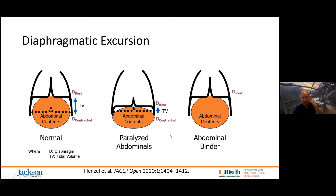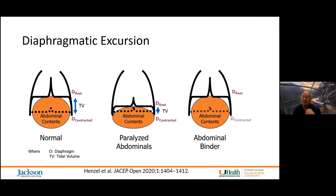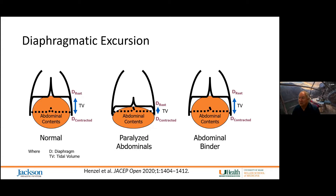We can employ a very inexpensive device called an abdominal binder. By using this binder, we press the abdominal contents back in and up against the diaphragm, restoring its resting length, essentially recovering tidal volume with this less-than-$20 appliance. Unfortunately, a lot of times it's not employed or patients choose not to use it, so we'll continue to encourage its use even after initial rehabilitation.